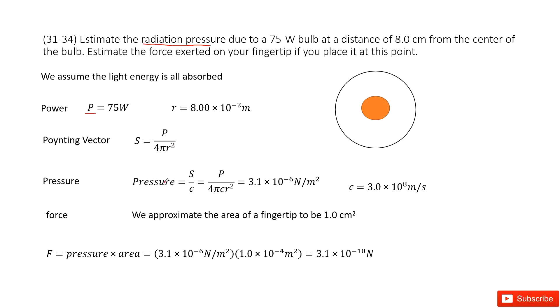And then we can get the pressure as the pointing vector divided by C. C is the speed of light. We write it there. Now we can input S inside. We get the equation. Look like this one. Input all the given quantity. You get answer there.